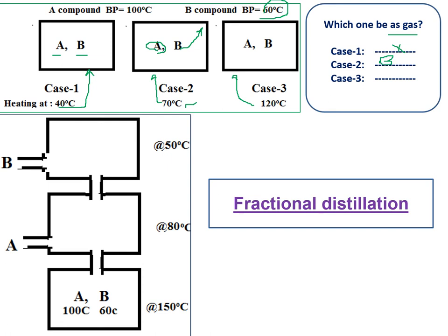In case three, we gave 120 degrees centigrade. B's boiling point is 60 and A's boiling point is 100 — both are less than 120. So both A and B become vapors. From this exercise, we observe that by depending on their boiling points, we can separate different liquids that are mixed together. In case two, if you open a tap, B converts to gas and comes out through a tube where you can condense it, thus separating A and B.